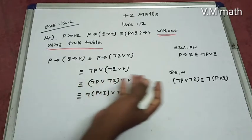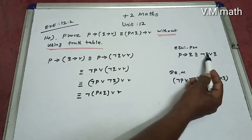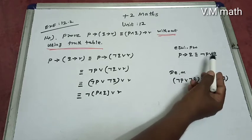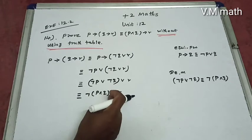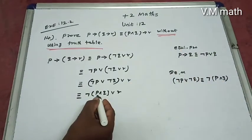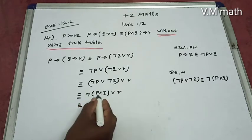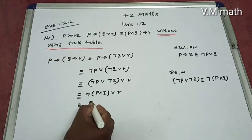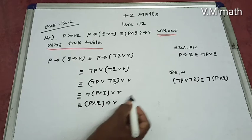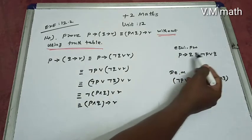Again applying the equivalence law: negation of first gives second. So treating p and q together, the first statement gives the second statement. The result is identical to: p and q gives r, which is the right hand side, p or q gives r.